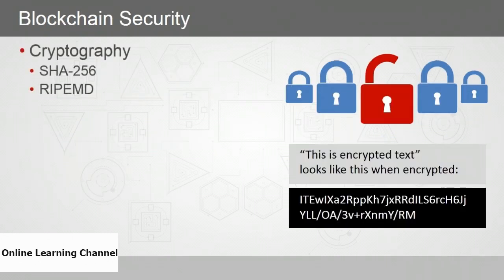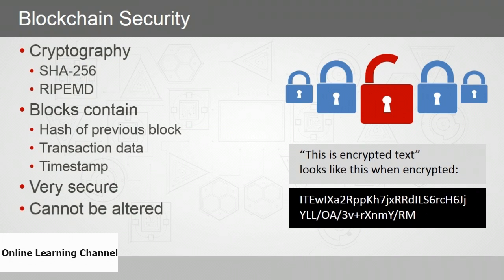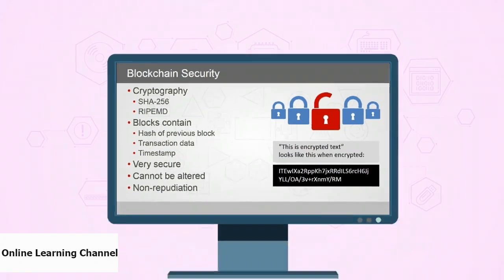Being decentralized isn't enough, however. Cryptography is still important, and blockchain uses hash functions to secure transactions — the blocks — as they're added to the blockchain. The two main hashing functions used are SHA-256 and RIPE-MD. Every blockchain block contains a hash of the previous block, the transaction data, and a timestamp. This chaining of hashes makes the blockchain very secure and provides non-repudiation — ensuring a party can't deny that something didn't happen.